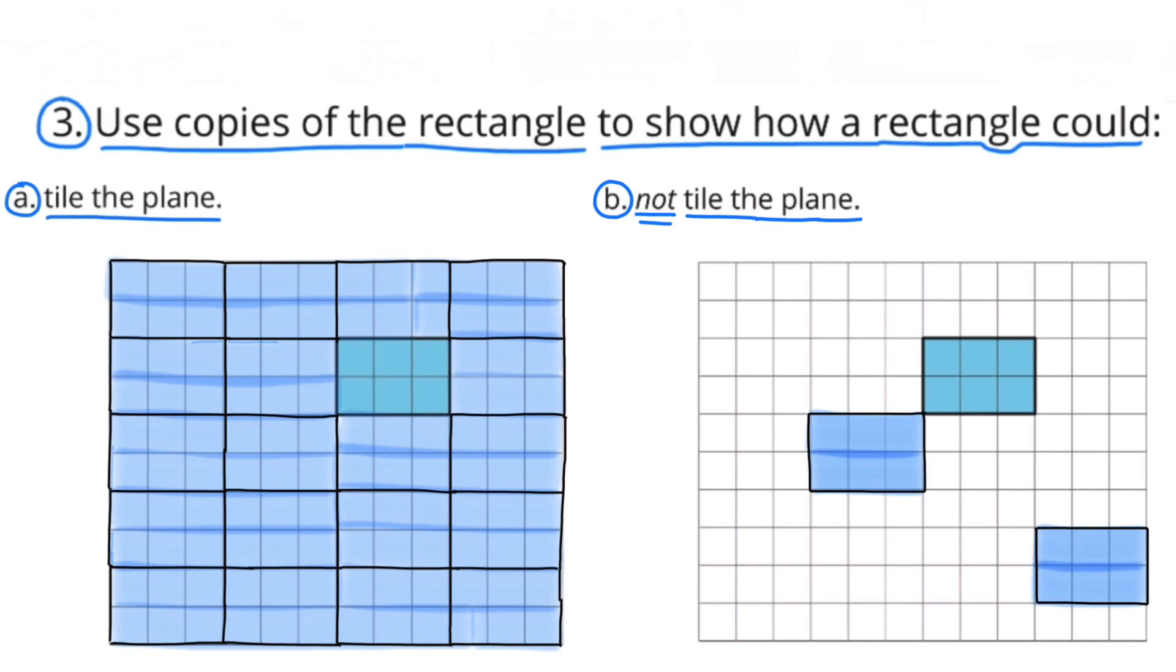And b, not tile the plane. So when you don't tile the plane, you leave gaps and you leave spaces. This is just one example. You can leave your gaps and spaces wherever you like.